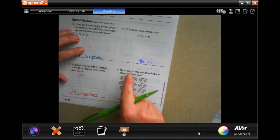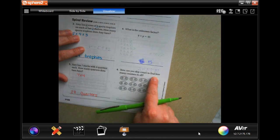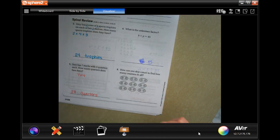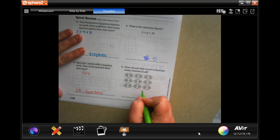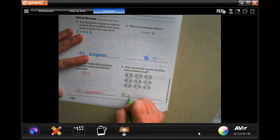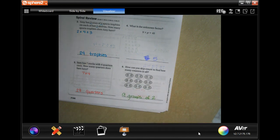All right, how can you skip count to find how many counters in all? Well there are one, two, three, four, five, six, seven, nine groups, and there's two in each group. So nine groups of two. All right guys, thanks for hanging out for 6.6. Come on back for 6.7. See you again.